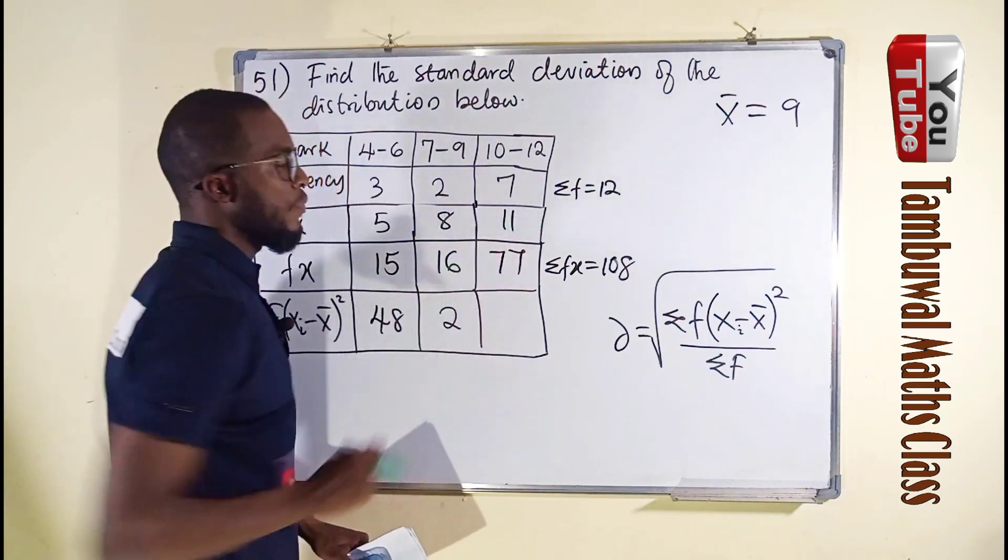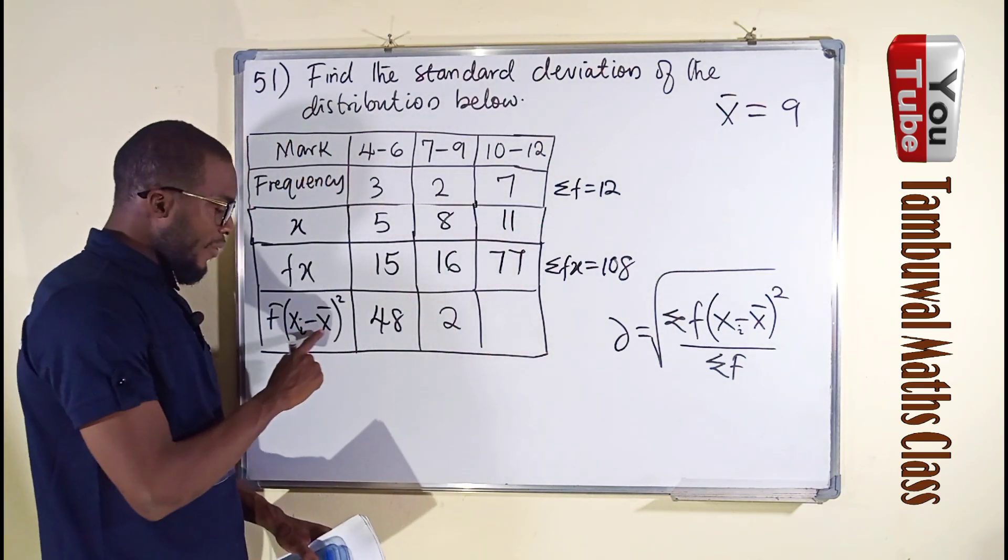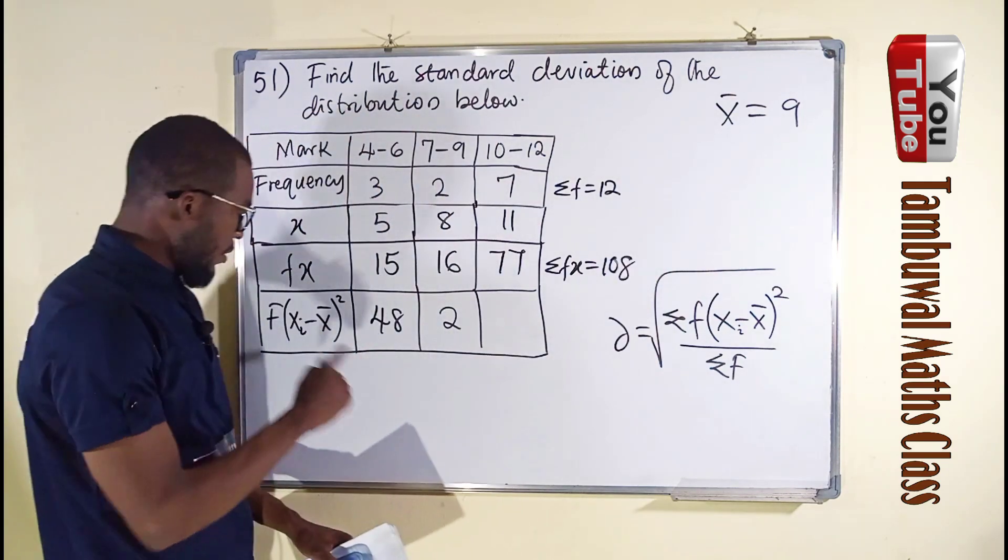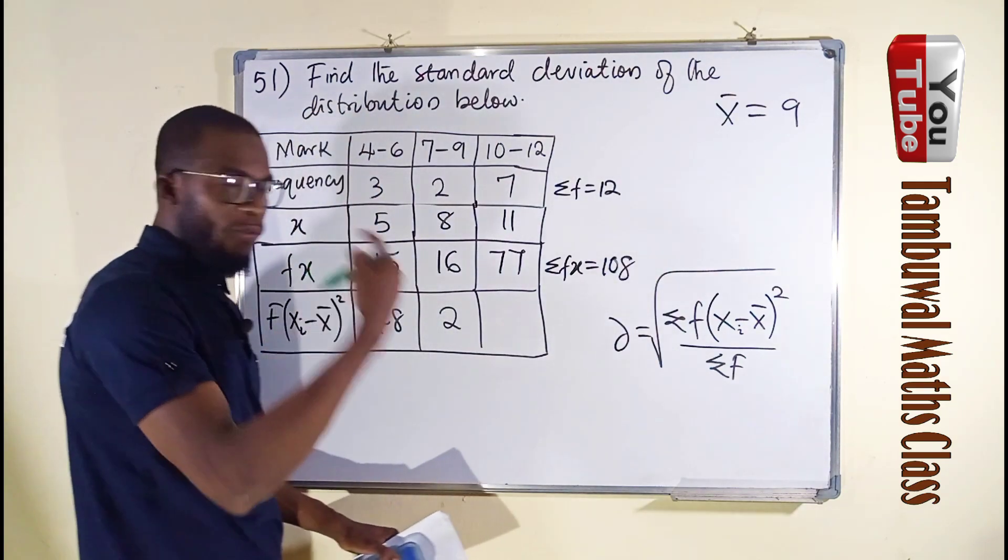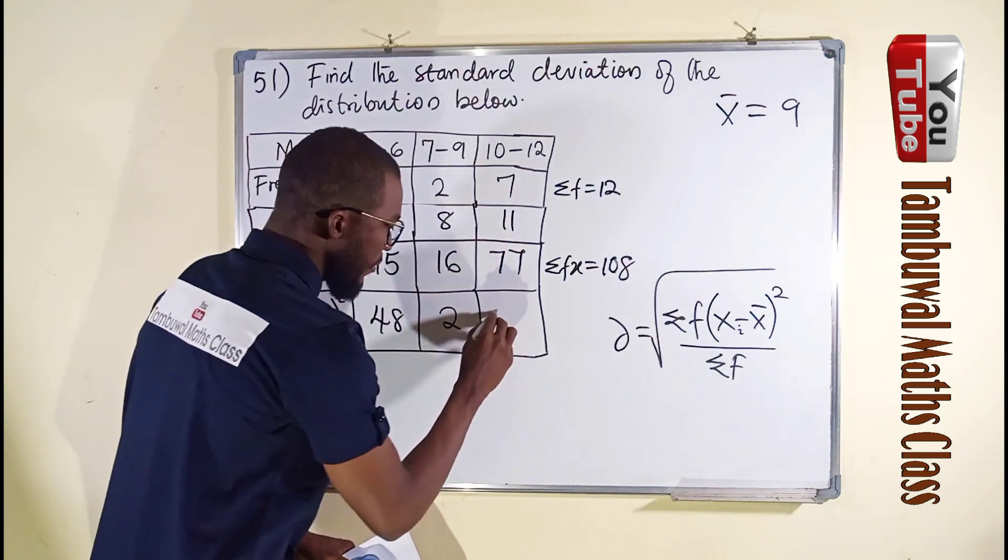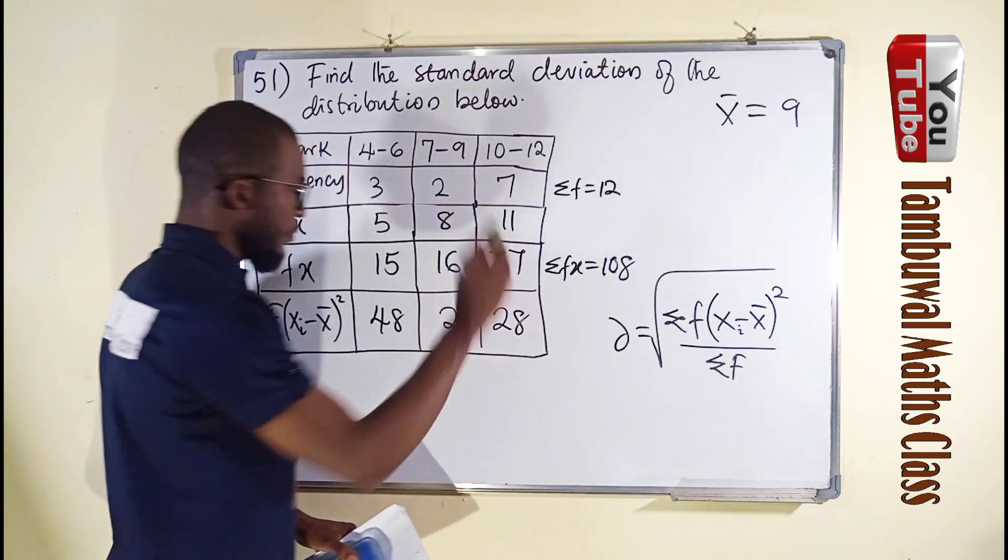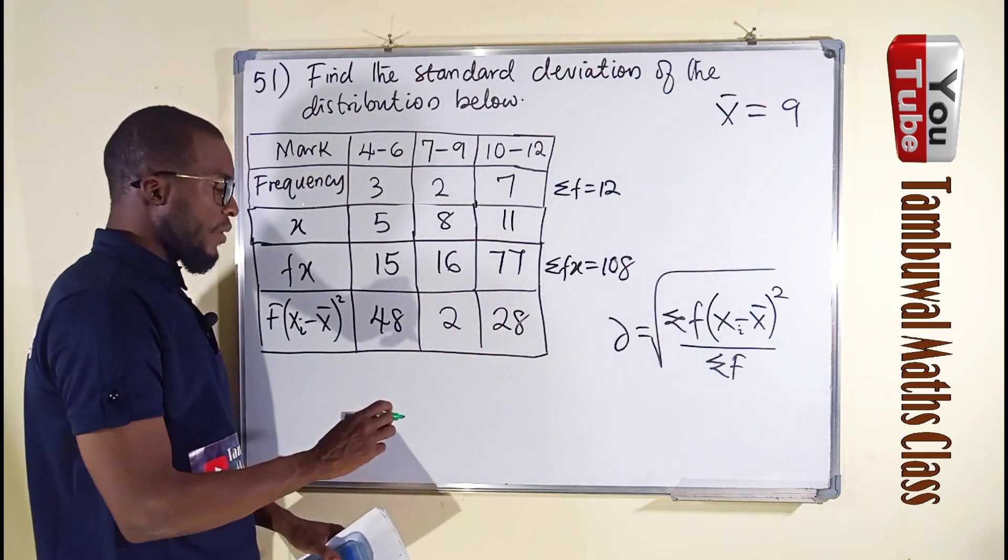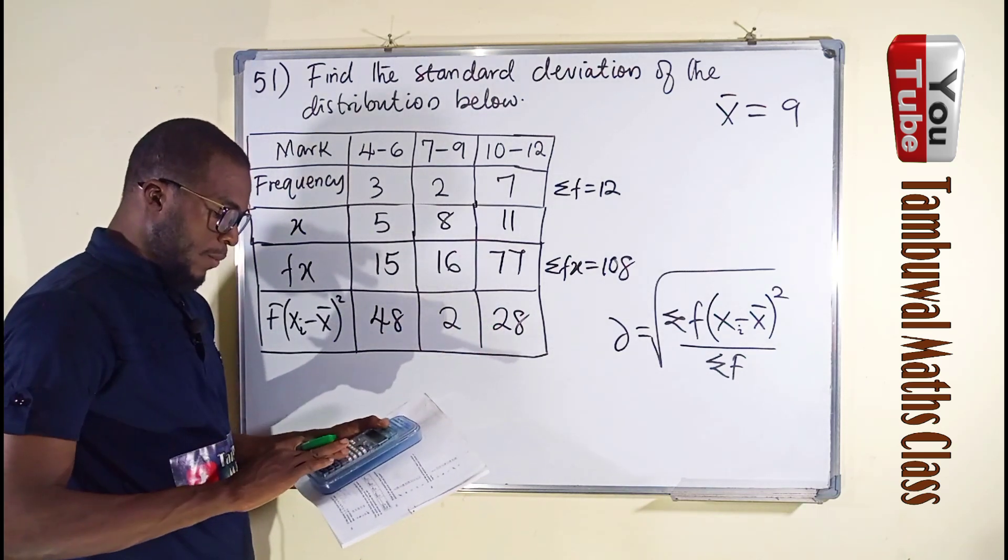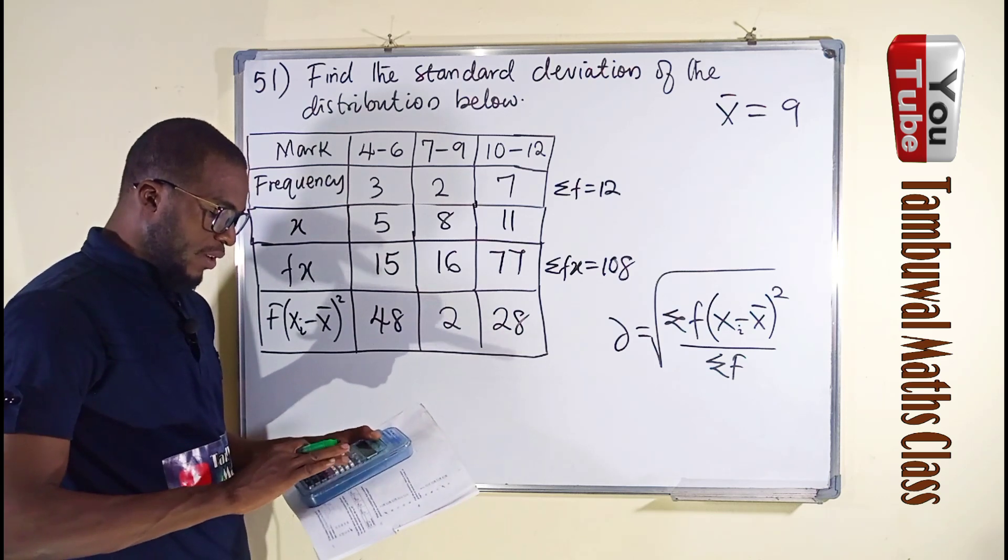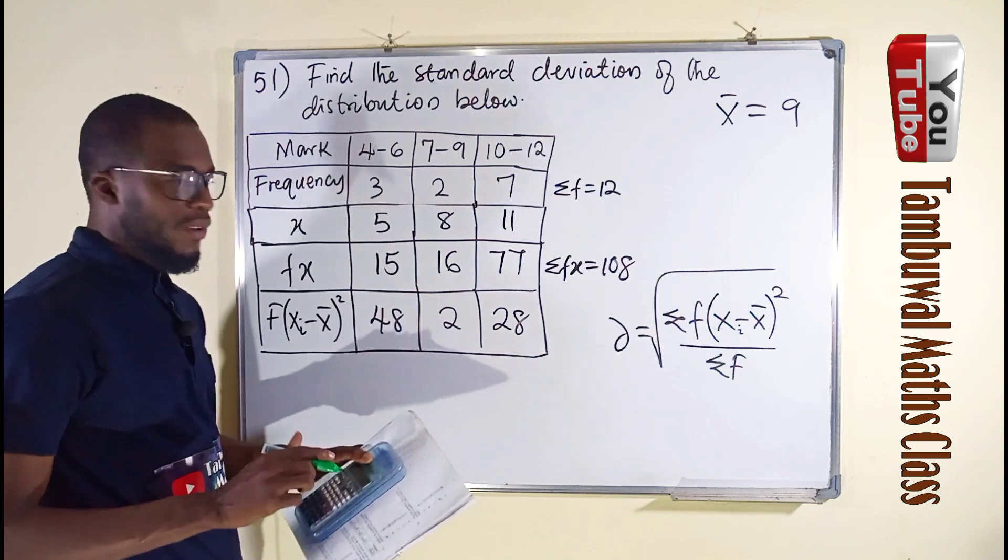The last x is 11. 11 minus x bar, 11 minus 9 is 2. Then 2 squared is 4, and 4 times 7 is 28. Now, if we add all this together, we say 48 plus 2 plus 28, we have 78.